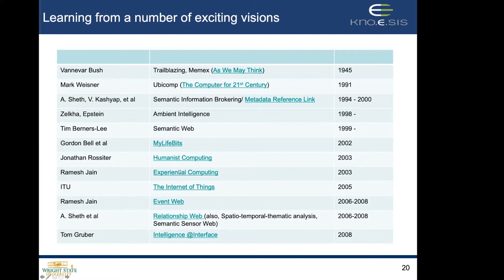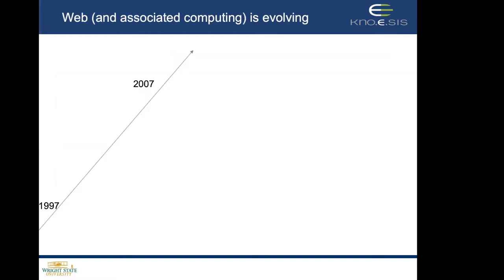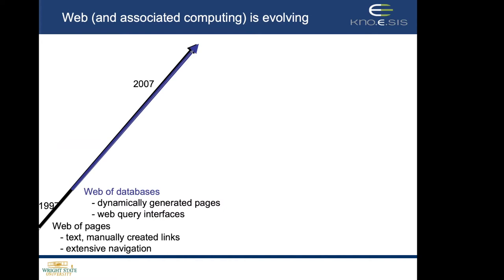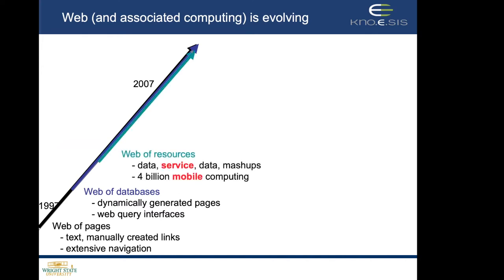There is also experiential computing from Ramesh Jain and others — intelligent interfaces — and the computing for human experience I define borrows from many of these things. Some historical notes: when the web started, it started with web pages and browsing with no search. Then came Yahoo, which built a directory. Then came a web of databases, where pages were dynamically created. Then a web of resources with all kinds of services.